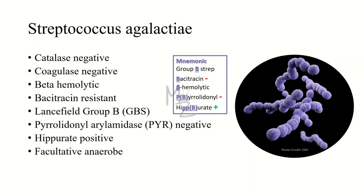I have a cool mnemonic for streptococcus agalactiae — you have to remember one letter and that's B. Streptococcus agalactiae belongs to group B, that's why it is GBS. It is bacitracin resistant — that also starts with B. It is beta hemolytic. Then for PYR, if you replace PYR with B since they look a bit similar, you can memorize it as PYR negative. And hippurate — replacing the P with B — hippurate positive. Hope this mnemonic helps.